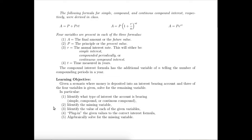First of all, we'll identify what type of interest the account is bearing, whether it's simple, compound, or continuous compound. That will tell us which one of the three formulas we're going to be using. Then we'll identify what the missing variable is, identify the value of each of the given variables, and then it's just a matter of plugging in the given values to the correct interest formula and then algebraically solve for the missing variable.